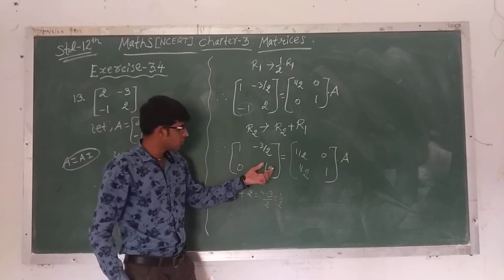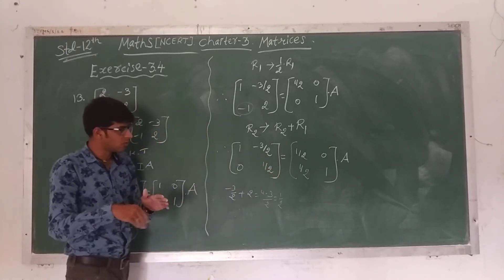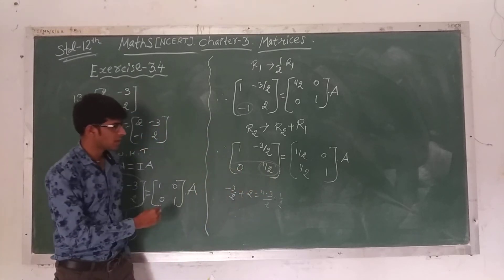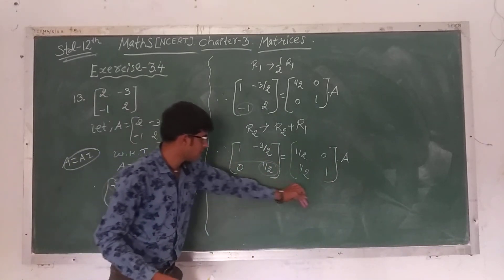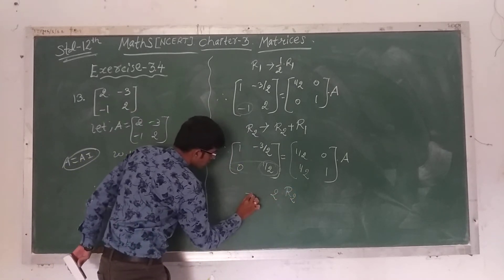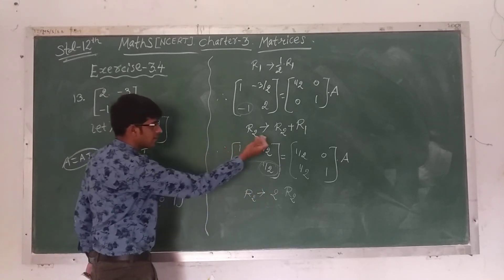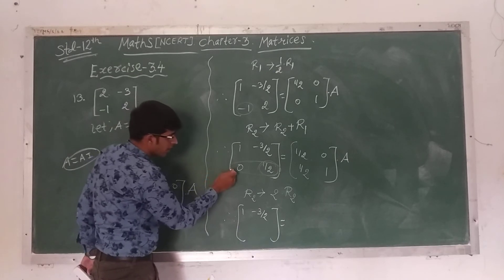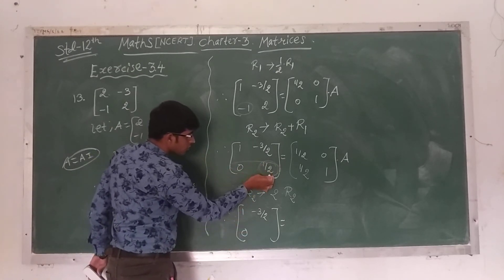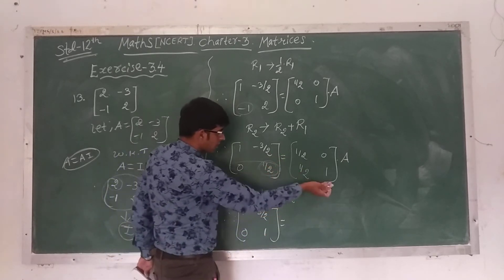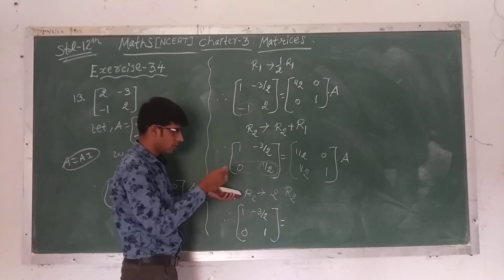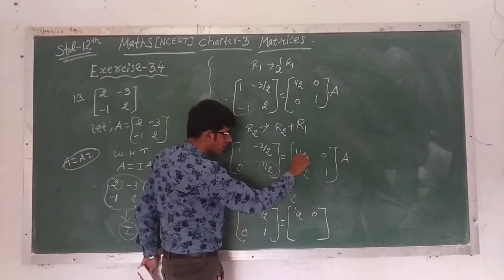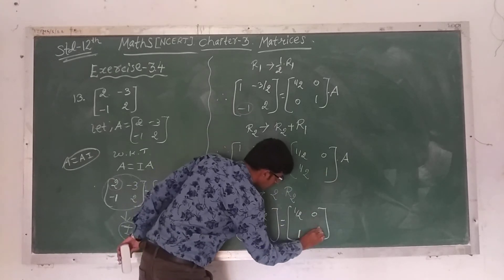What is our next goal? We have to make the A(2,2) element equal to 1. We multiply the second row by 2: R2 tends to 2R2. First row as it is on both sides: [1, -3/2] and [1/2, 0]. Second row: 0×2 = 0, (1/2)×2 = 1. Right hand side: (1/2)×2 = 1, 1×2 = 2. So the matrix is [1, -3/2; 0, 1] = [1/2, 0; 1, 2] times A.